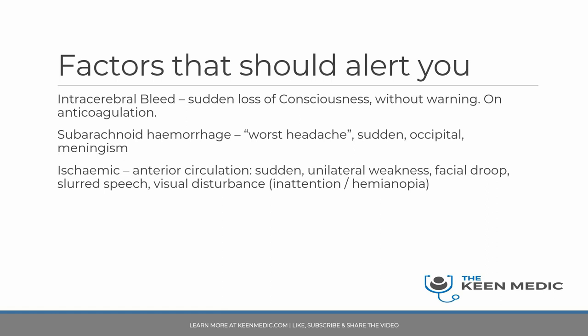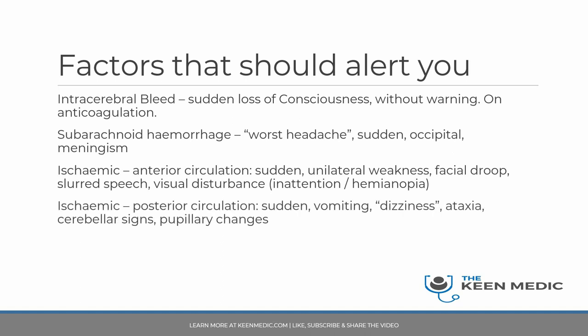For posterior circulation ischemia, onset is also sudden. Symptoms include vomiting, dizziness, ataxia, cerebellar signs, and pupillary changes, because the posterior circulation supplies the cerebellum and brainstem which coordinate bodily movement. When an elderly patient presents with sudden-onset vomiting and ataxia, a CT head must be performed to look for a posterior ischemic event, even if they don't have weakness or facial droop.